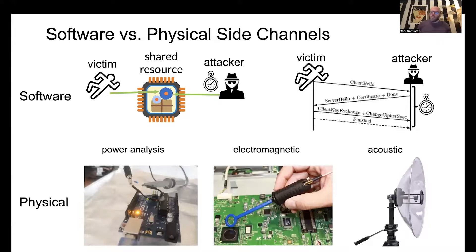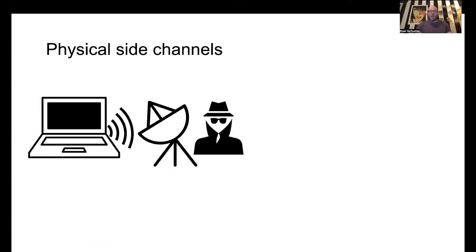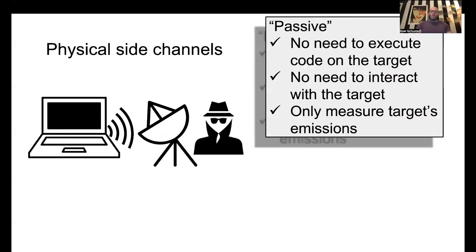But this talk is more about physical side channels, where the attacker actually puts a physical probe next to a victim device, and by analyzing the emissions from the victim's device, they can tell something about what the victim device is doing, what secrets it holds, etc. Passive physical side channels are nice because they don't need to execute any code on the target.